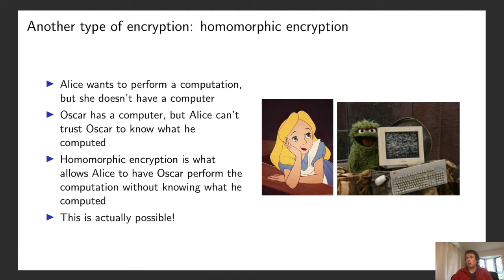In the homomorphic encryption scenario, suppose that Alice wants to perform a computation, but she doesn't have a computer that can perform it. Oscar does have a computer, but similar to before, Alice doesn't trust Oscar to know what he computed. So homomorphic encryption is what allows Alice to have Oscar perform the computation without knowing what he computed. It's kind of remarkable that this is actually possible, but it is.